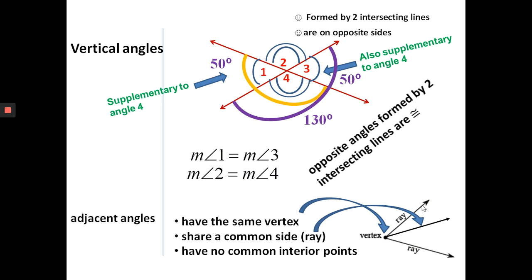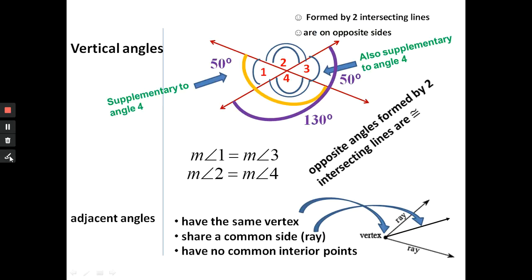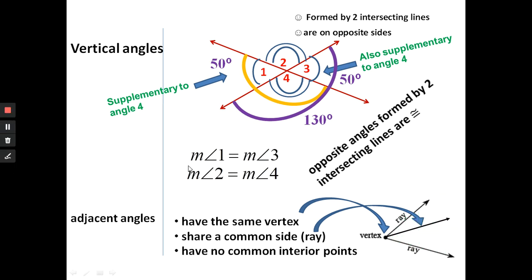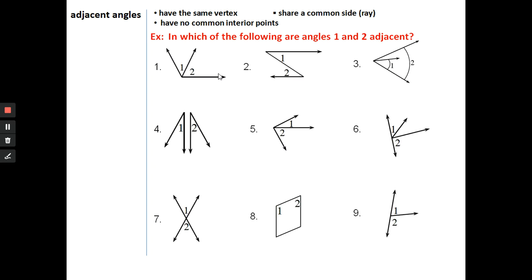They both share the same vertex and the same ray in the middle. No common interior points means the interiors of angle one and angle two — the region between the two rays — do not overlap. Since there's no overlap, these could be adjacent angles. In order to be adjacent, all three requirements must be satisfied.